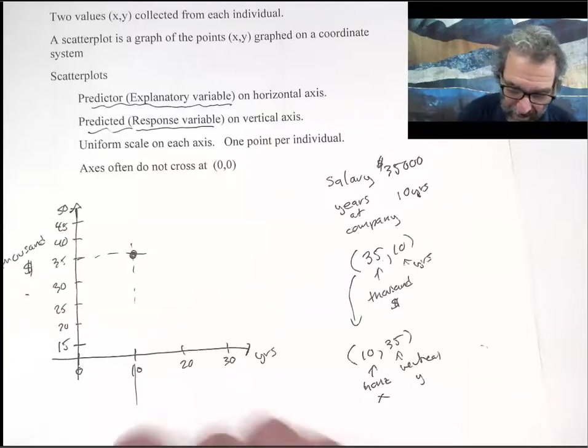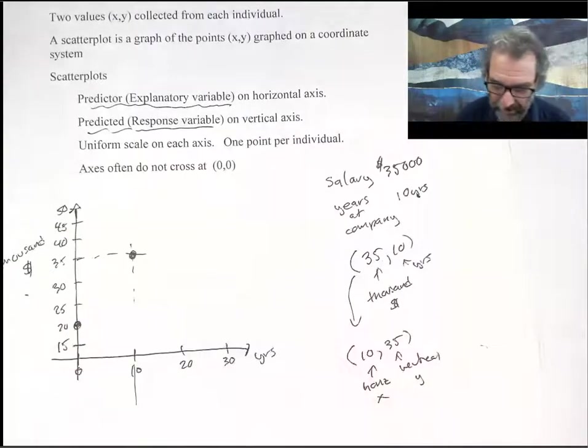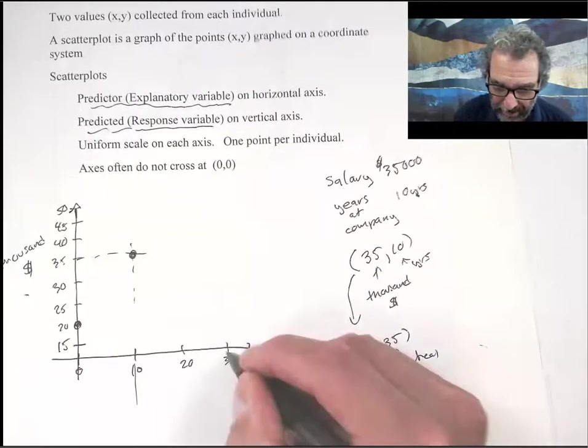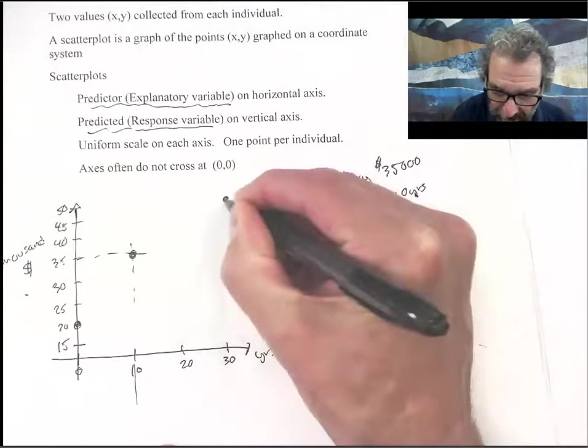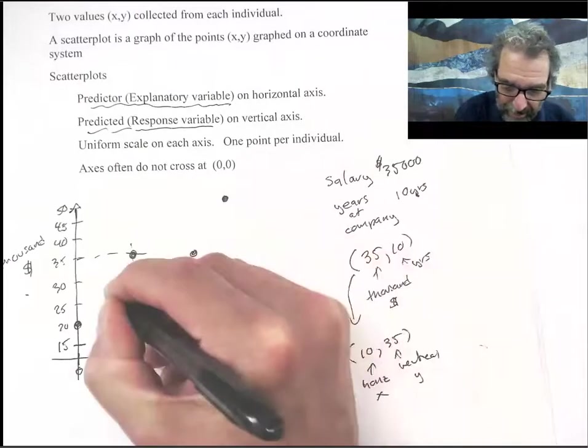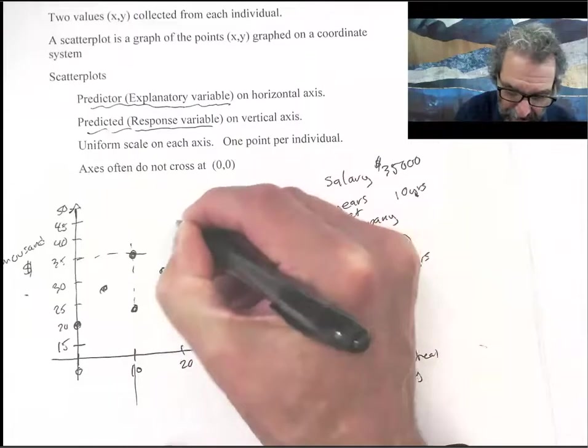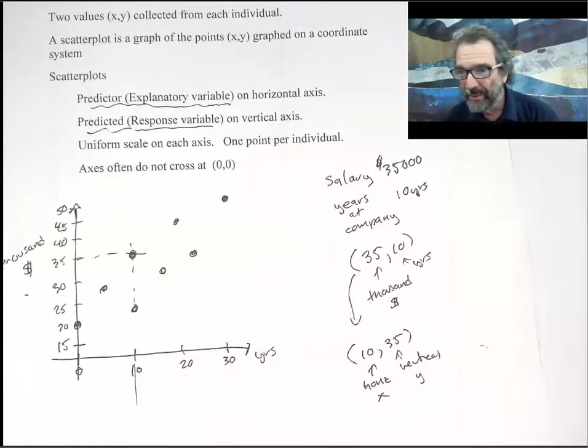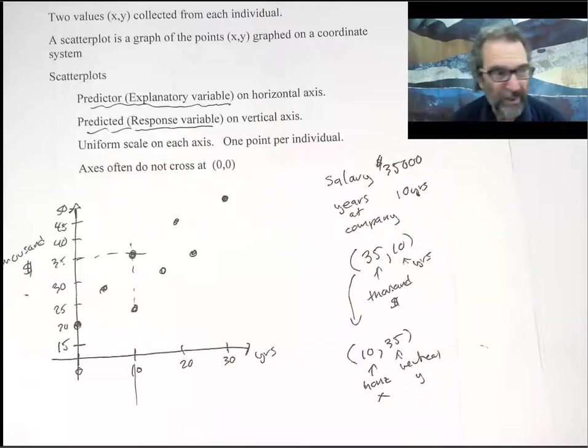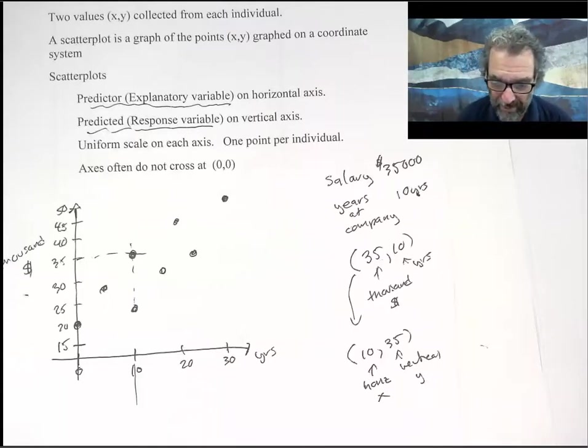And you would do that for all the employees at the company. Maybe someone just started, they're making 20,000, they would show up there. Maybe someone's been there 30 years and making 50,000, it would show up there. And pretty soon, maybe a pattern would emerge of how the salaries are predicted by number of years in the company. That's how a scatterplot works. It's just an initial graph of the data to help you decide what patterns seem to be present.